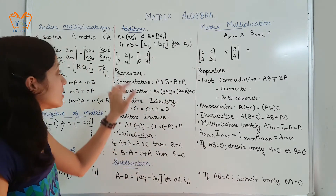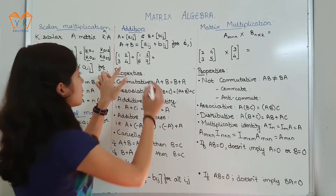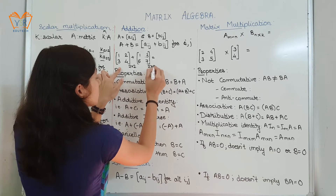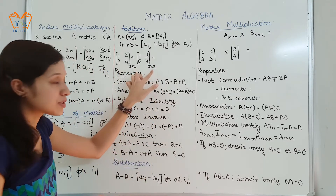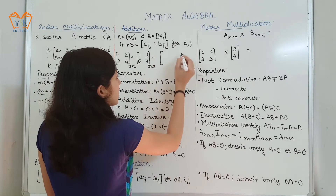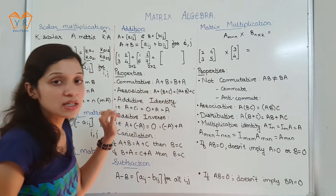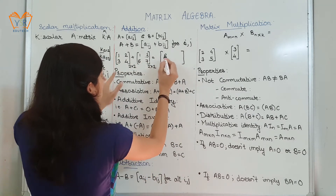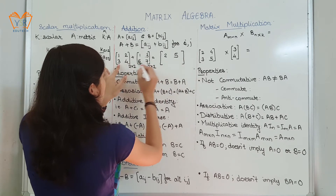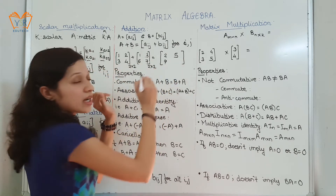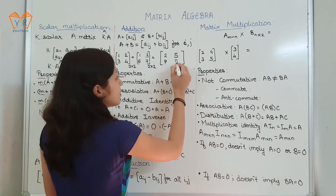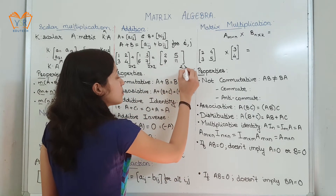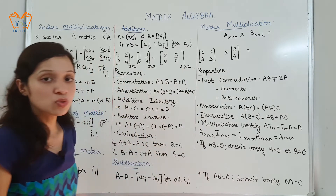Let us see how addition takes place. Two matrices of the same order 2×2 — they are conformable for addition. Addition takes place element to element: 1+1=2, 2+3=5, 3+6=9, and 4+7=11. The resulting matrix is of the same size 2×2.